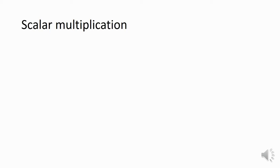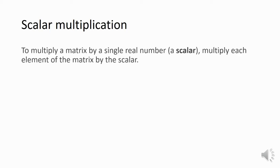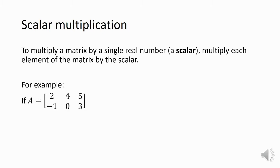Scalar multiplication is also really straightforward. If we want to multiply a matrix by a scalar - that is just a number - we multiply each element of the matrix by that scalar. So if we've got matrix A, which is a 2×3 matrix, and we multiply it by 3, we still get a 2×3 matrix, but every element is multiplied by 3: 2 becomes 6, 4 becomes 12, and so on.